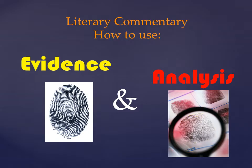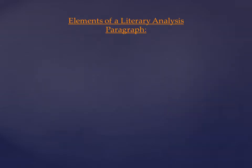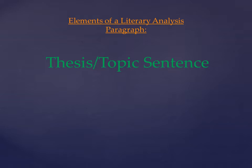Before we talk about evidence and analysis specifically, we need to talk about the paragraphs in a literary analysis paper. There are three main elements to a paragraph. The first is a topic sentence, which usually relates to the thesis of the entire paper. You have the evidence, which is a quotation you've pulled from the text, and then you've got the analysis. A literary analysis paper is nothing more than a collection of paragraphs, so you have to get the balance right in the paragraphs in order for the paper to work.